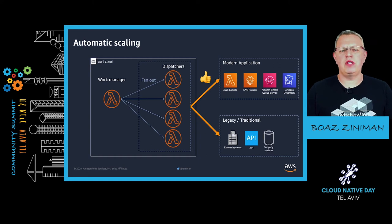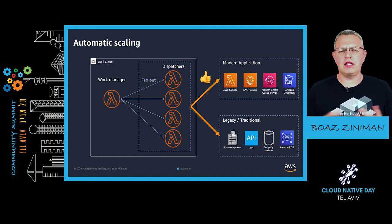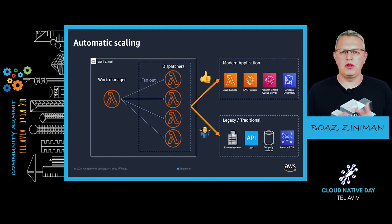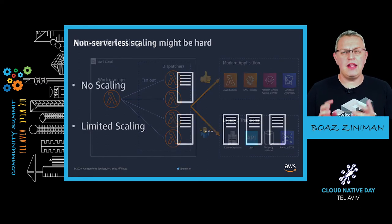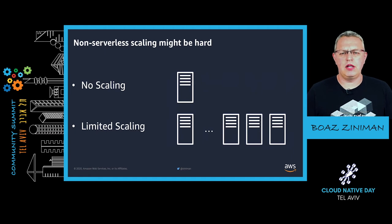But what happens when the other side is a legacy or traditional application? Like an external system, a third-party API, or even a SQL database like Amazon RDS or a database you're managing. In that case, I'm not sure those systems will be able to cope with the load if you're not taking some very specific measures. The reason for that is scaling — scaling for traditional or non-serverless systems can be really, really challenging.